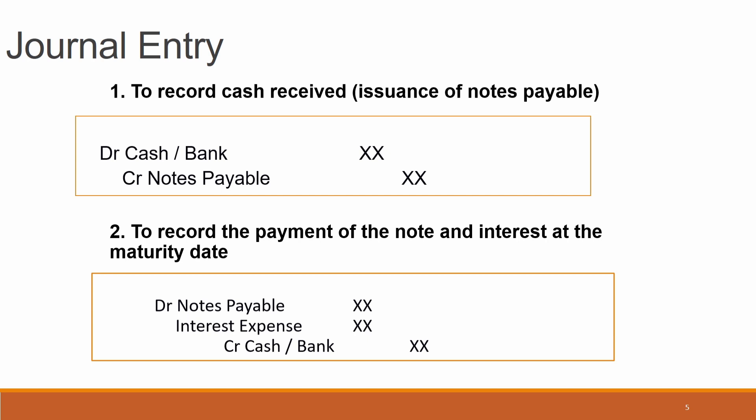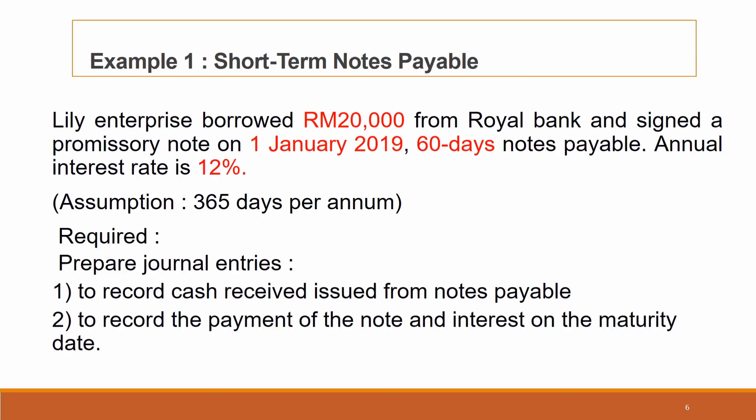Now look at Example 1 for short-term notes payable. Lily Enterprise borrowed RM20,000 from Royal Bank and signed a promissory note on 1st January 2019 — a 60-day notes payable with an annual interest rate of 12%. We assume 365 days per annum. You are required to prepare the journal entry: first, to record cash receipt issued from notes payable; and second, to record the payment of the notes and interest on the maturity date.